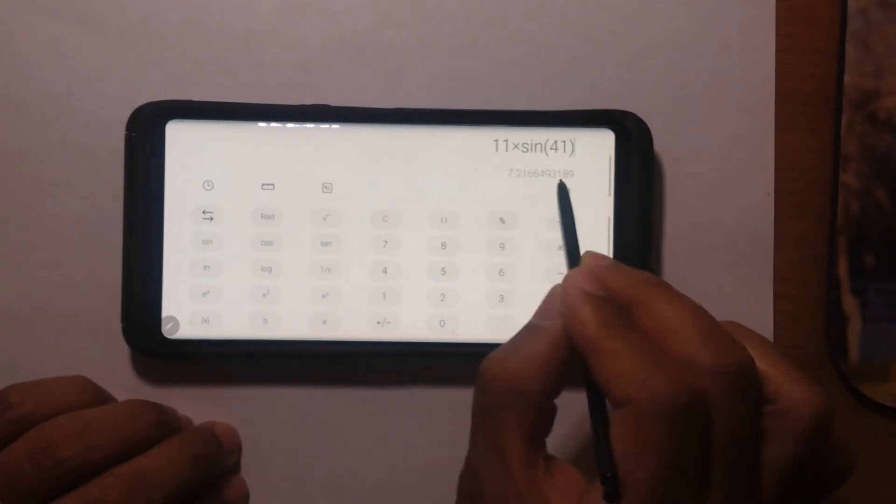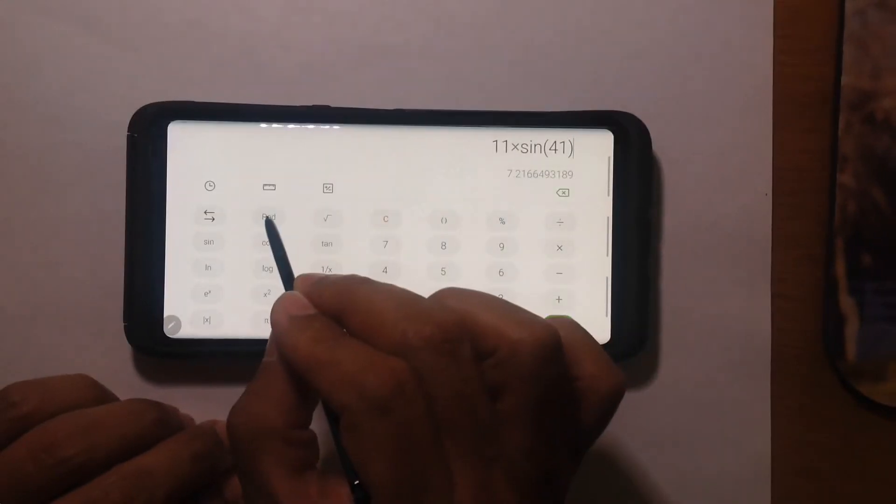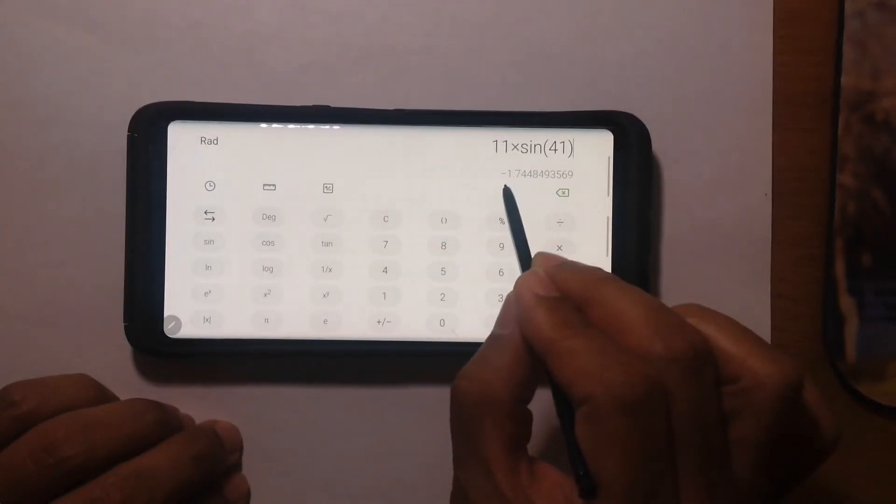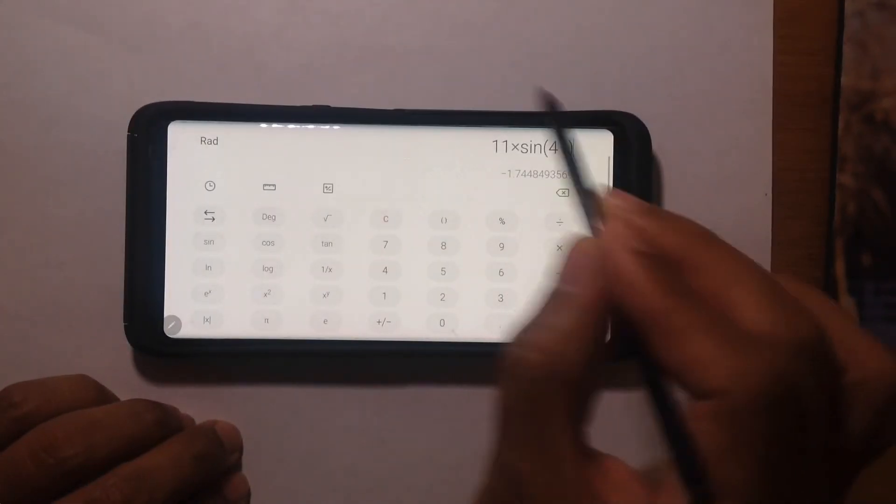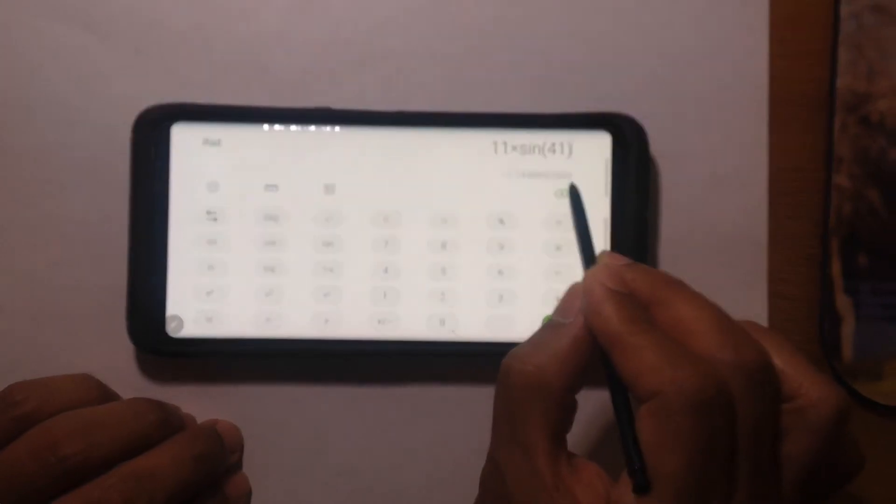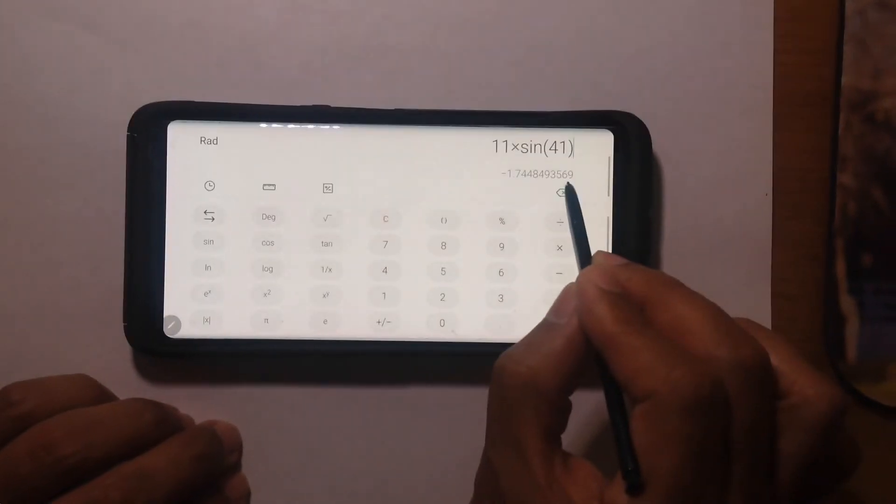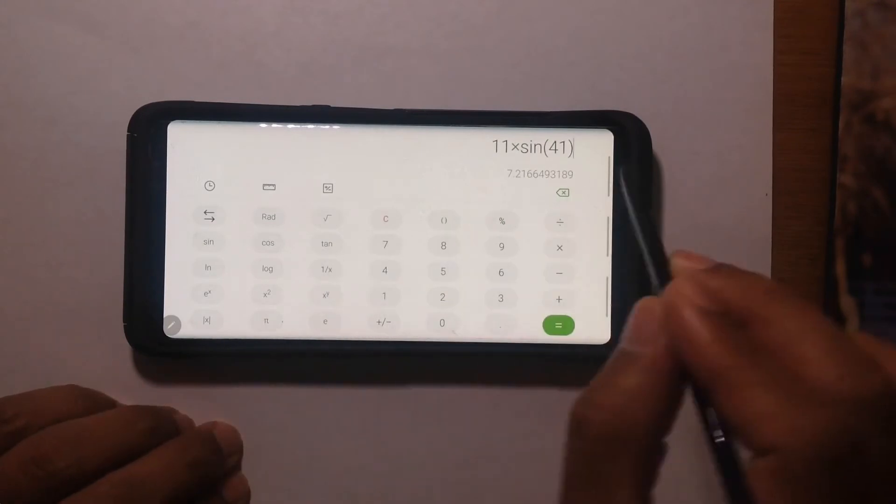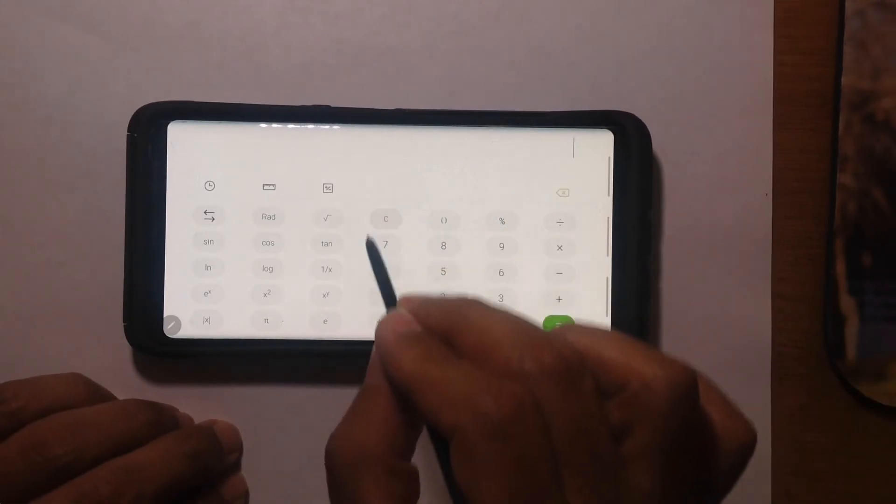Here, the answer changes to negative 1.74. So if you give this answer for this problem, it will be incorrect. Just make sure that it's in degree mode. Something else that you saw in one of the problems when I was trying to find the measure of a central angle—we use the inverse trig functions.